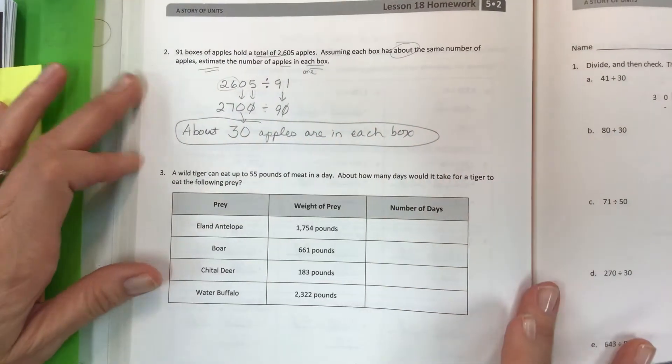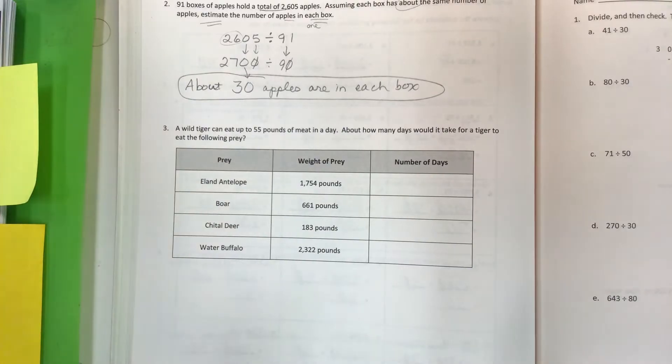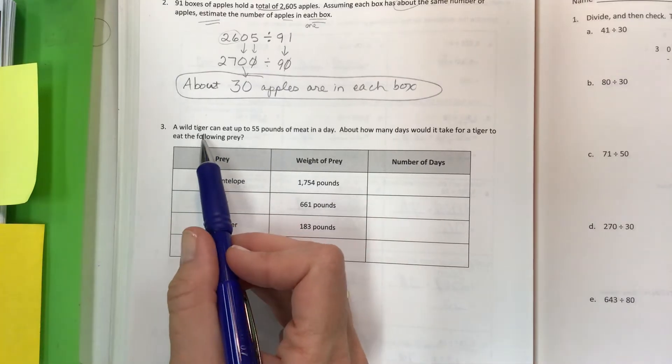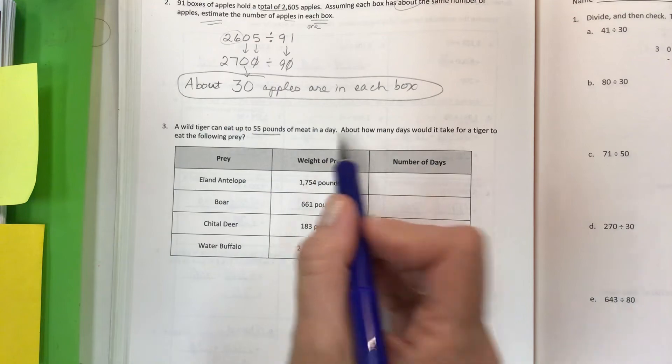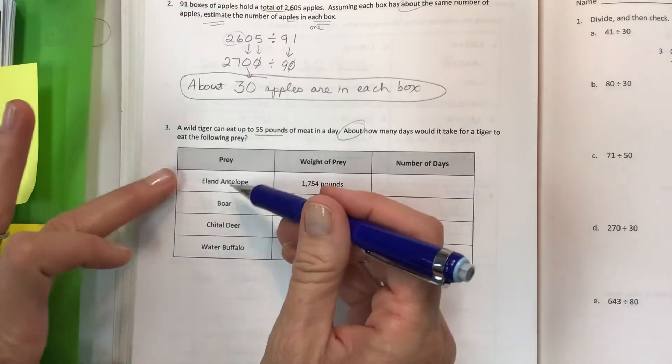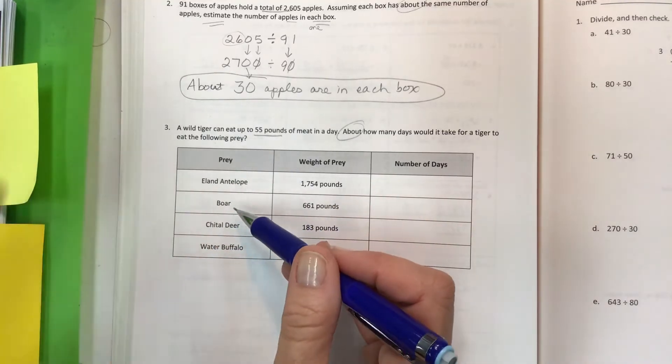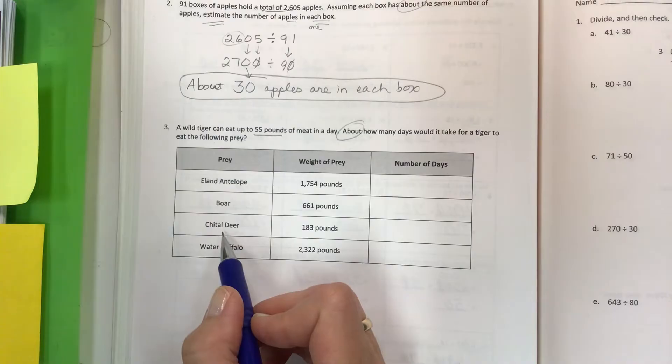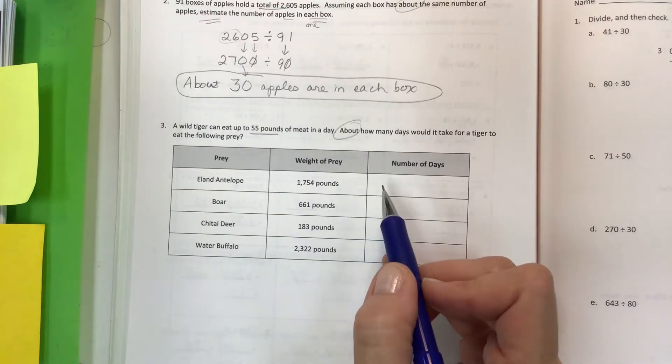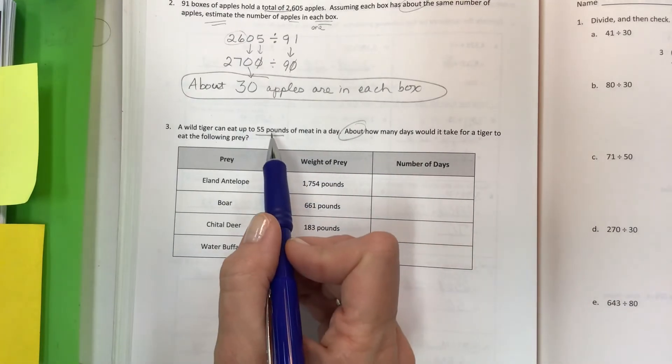Rate your answer in a statement and move on. Oh yeah, and click subscribe if you like my videos! Come back again. This last one is more than one calculation because we have four different things happening here. A wild tiger can eat up to 55 pounds of meat in a day. About how many days would it take for a tiger to eat the following prey? Here are the different types of prey that you have to calculate. Here is the weight - we've got the antelope, the boar, chital deer (not sure how to say that one), water buffalo. So the number of days - kind of a creepy problem but good for this time of year.